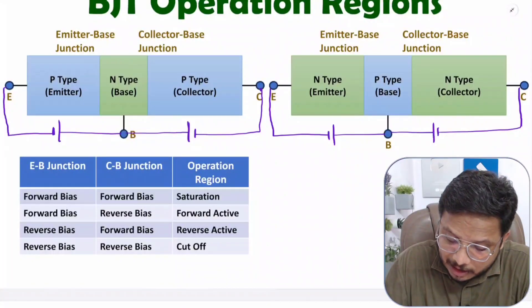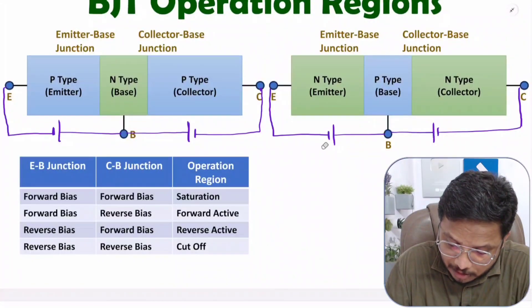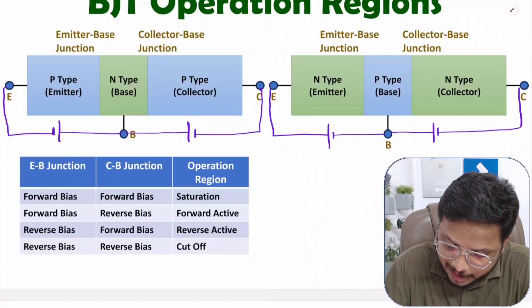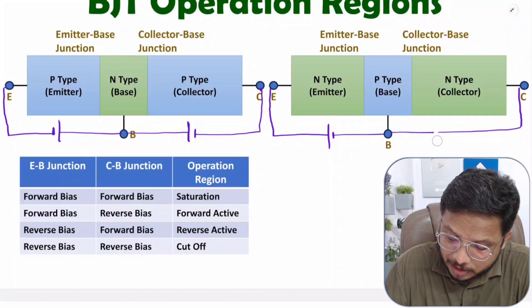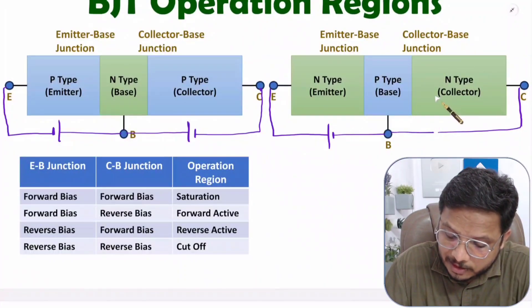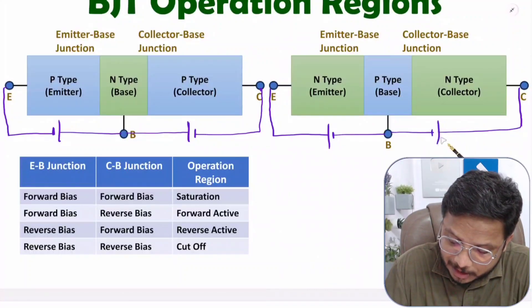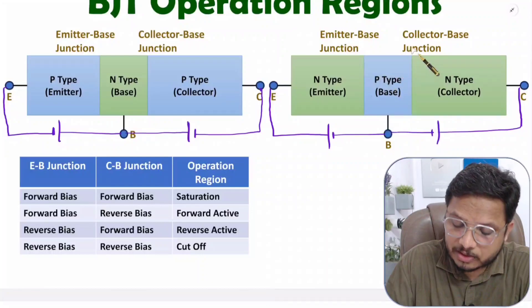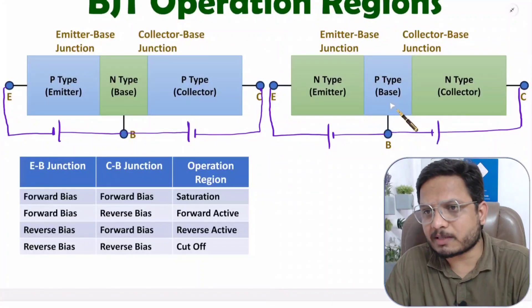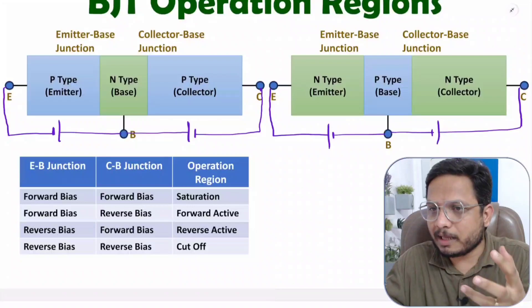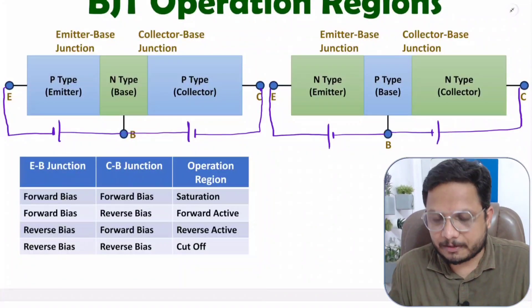To have NPN in cutoff region, the N-type should be connected with the positive terminal and the P-type with the negative terminal. For the collector-base junction in reverse bias, the P-type is connected with the negative terminal and N-type with the positive terminal. Both junctions are now in reverse bias, and both NPN and PNP are in cutoff region.